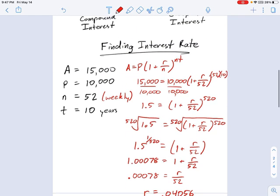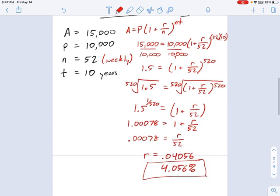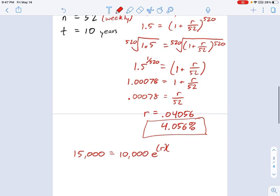Let's try this for continuous compounded interest. We'll use all the same numbers and we're just going to plug this into a Pe^rt formula. So we'll say 15,000 = 10,000e^(rt). I don't know what r is, but I do know that the length of time we're waiting is 10 years.